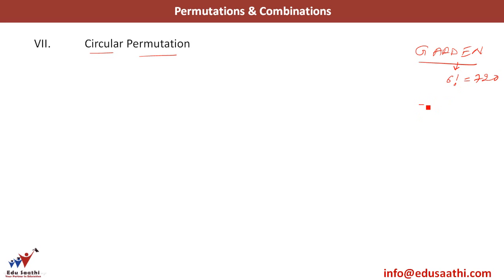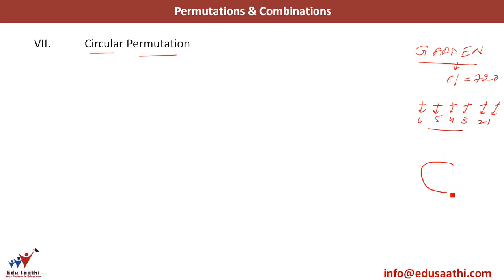How did this 6 factorial come up? We had 6 spaces, and the first position can be filled in 6 ways, the second in 5 ways, the third in 4 ways, then 3, 2, and 1 — so this is 6 factorial. Now imagine that I have to seat these 6 letters on a table. I draw 6 chairs and arrange them around a circle. Will the answer be 6 factorial or something else? The answer is not 6 factorial but 6 minus 1, which is 5 factorial.